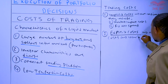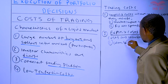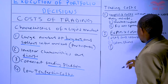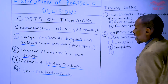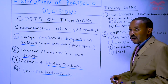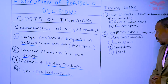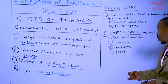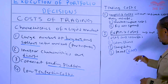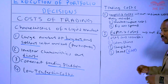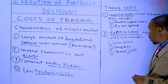Explicit costs include: number one, commissions; number two, stamp duty; and number three, taxes. If you recall, about five to six years ago, the government in Kenya had tried to implement what we call capital gains tax — CGT. Capital gains tax is a form of taxes. Of course, it was scrapped out in Kenya, but in fixed income investments it's still there, and that's why it is listed here.